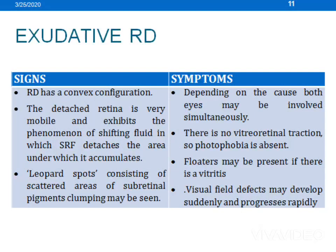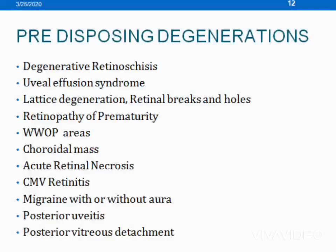Exudative RD has a convex configuration. The detached retina is very mobile and exhibits the phenomenon of shifting fluid. Leopard spots can also be seen in this condition. The predisposing degenerations include degenerative retinoschisis, uveal effusion, choroidal mass, and CMV retinitis.